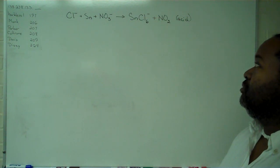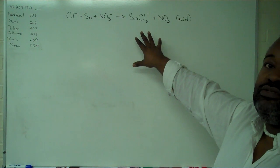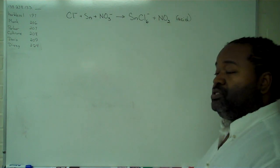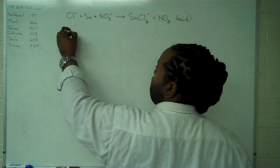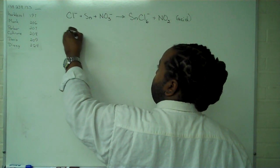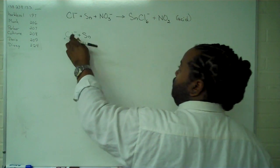The first step in doing redox reaction balancing using the half reaction method is to ensure that you have a separation of two half reactions that are capable of being balanced. So our first half reaction will have